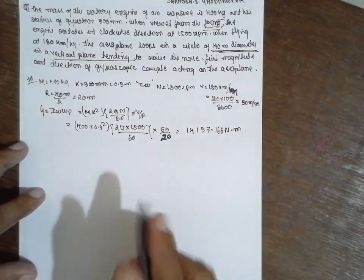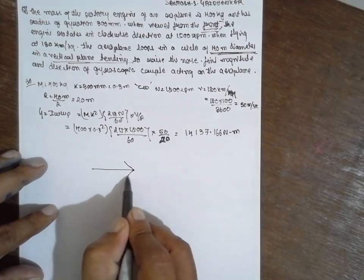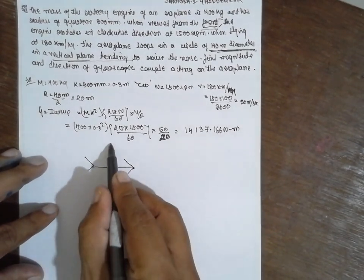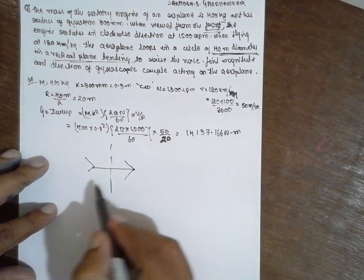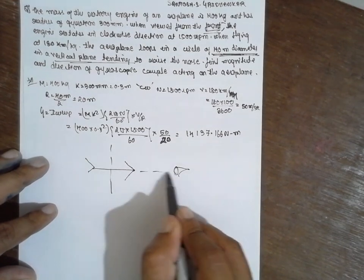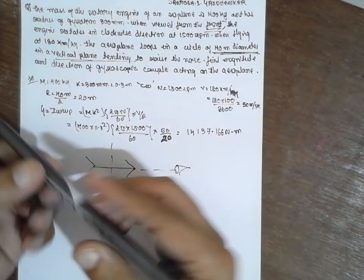Now this is the aeroplane I am taking it. This is the aeroplane. It is from the vertical position vertical trending plane. The direction of viewing is in this direction. Now rotating is clockwise direction.